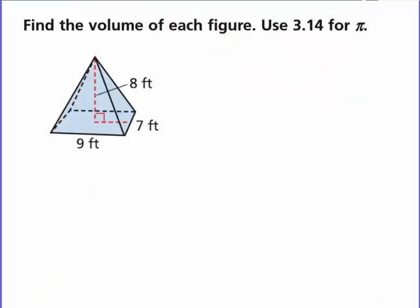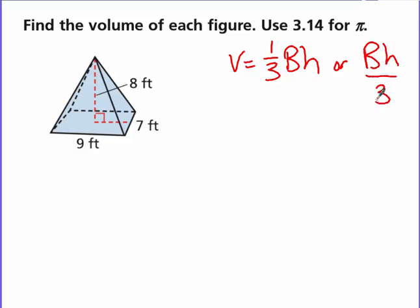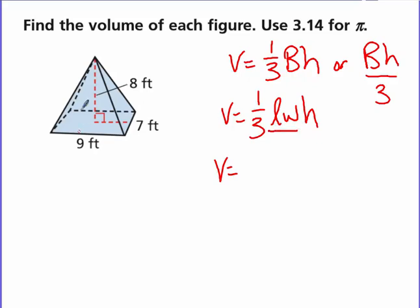Here's the first one. This one is a rectangular pyramid. We start off with the formula V equals one-third capital B times H. You could also just do a divide by three at the end. In this particular one we have a rectangular base, so inside capital B we plug in our rectangle formula: length times width times height. We've got one-third times 9 times 7 times — and then the height is this distance right here, from the center of the base to the farthest point away — which is 8.